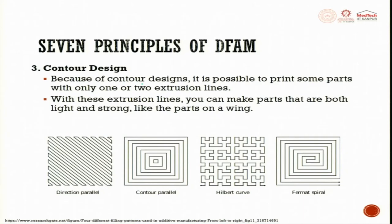Contour design: because of contour design, it is possible to print some parts with only one or two extrusion lines, making parts that are both light and strong. Different fill patterns include direction parallel, contour parallel, Hilbert curve, and Fermat spiral — each offering different structural characteristics for the printed part.